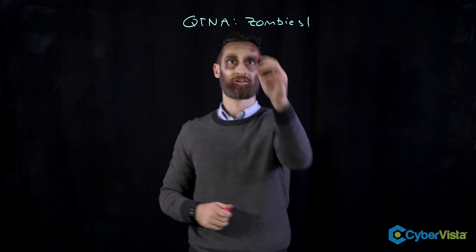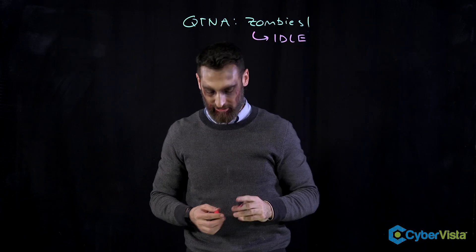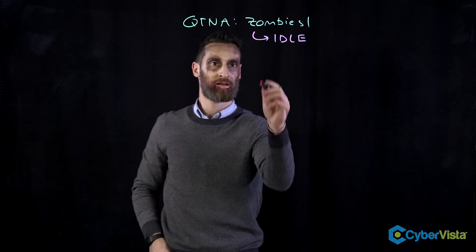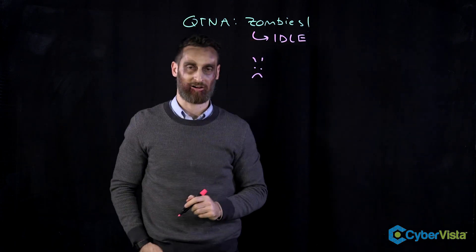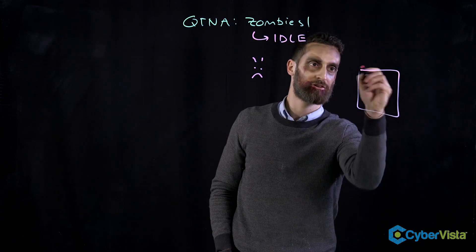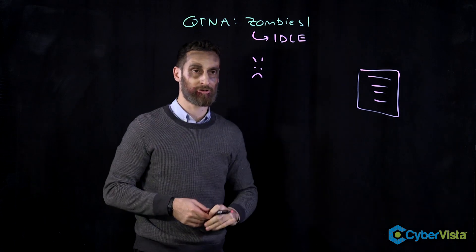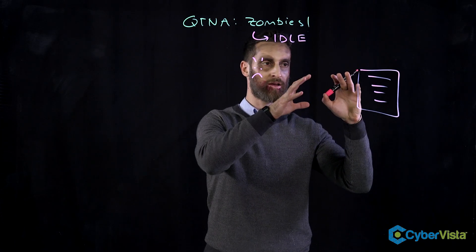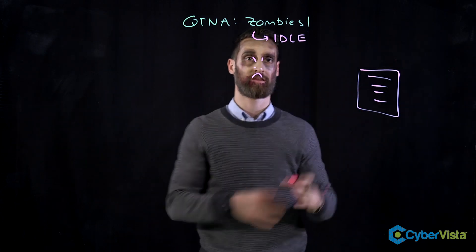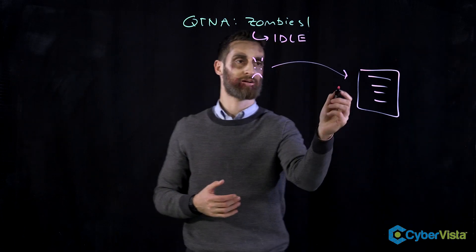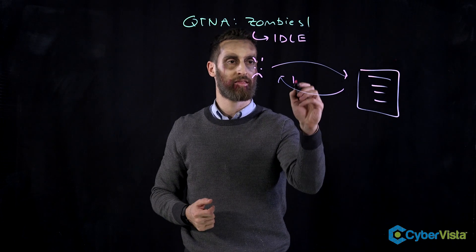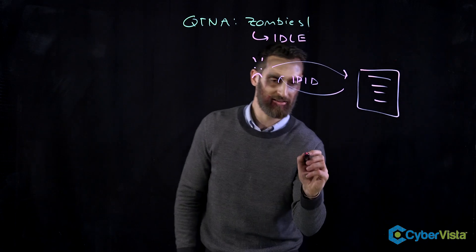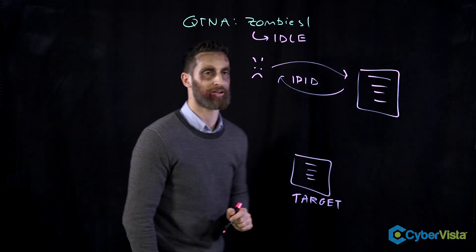What we're going to talk about is called an idle scan. It's called an idle scan because we're using a zombie — an idle computer — and the fact that the computer is idle will be very important a little bit later. The first step for our attacker is to identify a zombie, an idle computer that doesn't communicate unless we tell it to. We're going to get something called an IP ID number from that computer by sending it a message and soliciting a response.